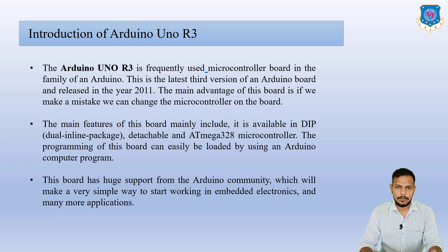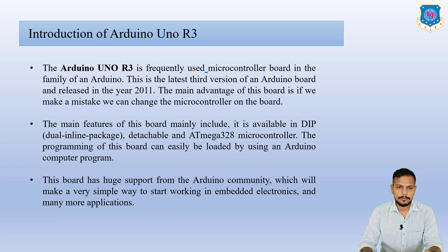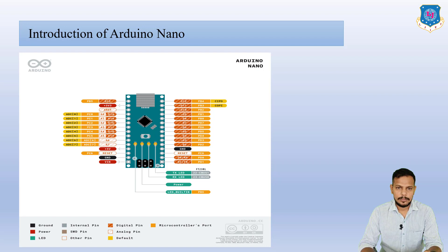Arduino Uno is the most frequently used microcontroller board in the Arduino family. This is the latest third version, that's why it is known as Uno R3, released in 2011. The main advantage of this board is that if we make a mistake we can change the microcontroller. It is available in DIP — dual inline package — and uses the ATmega328 microcontroller.